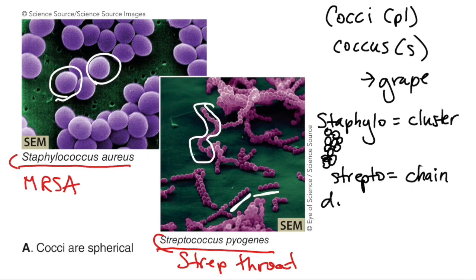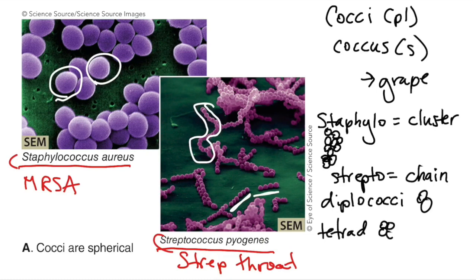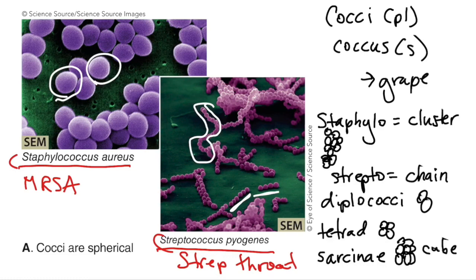There are two other organizations we can see with cocci. Sometimes we see diplococci — two cocci stuck together, just very short chains. There are also tetrads, which are four bacteria arranged together, and the sarcinae, which are like a cube — two tetrads stacked on top of each other.